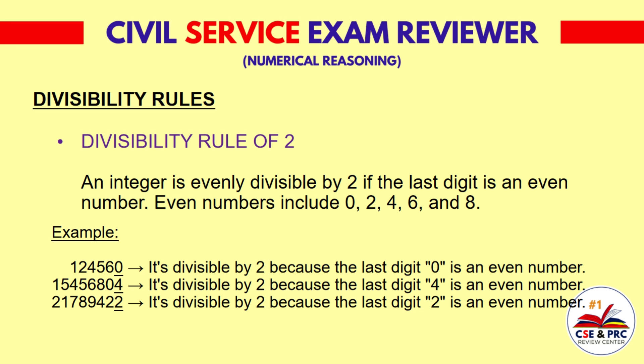Another example: 15,456,804 is divisible by 2 because the last digit 4 is an even number. The same with 21,789,422, since the last digit 2 is an even number.